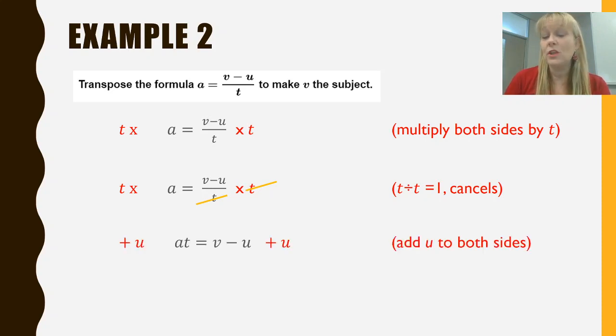Now to get the u away from the v, we have to add the u to both sides. So we're going to have minus u plus u, that gives zero and plus u on the left hand side. So the left hand side will now read at plus u and v will be on the right hand side. And once again, we are done. So this one took two steps. So it's always good to plan a little bit before you get started and have that little few seconds just to think about what is it that you need to do. What are the inverse operations? What is the opposite of divide? What is the opposite of subtract?